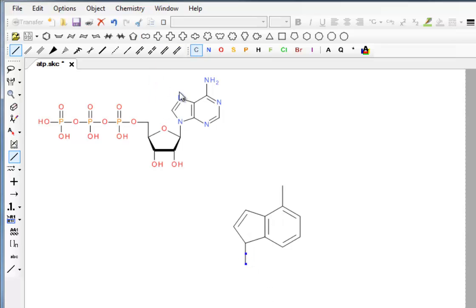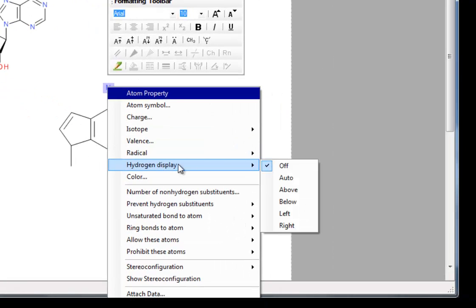The next thing we want to do is put in these nitrogens, so we go to the toolbar and select nitrogen. If you click on there, nitrogen will appear and it's an amine group. We want to show the hydrogens explicitly, so we right click, go to hydrogen display, and click on auto.